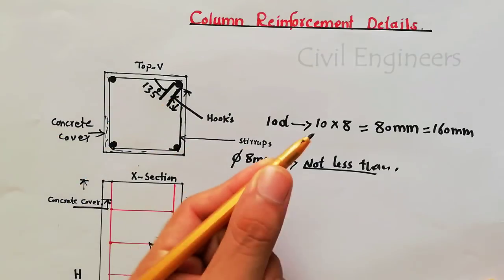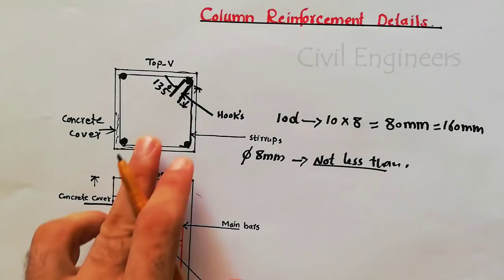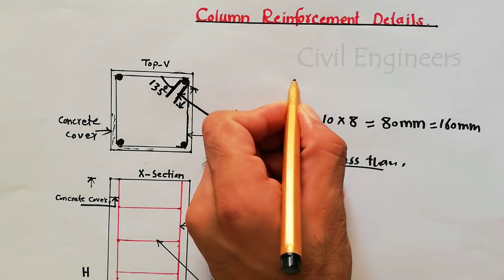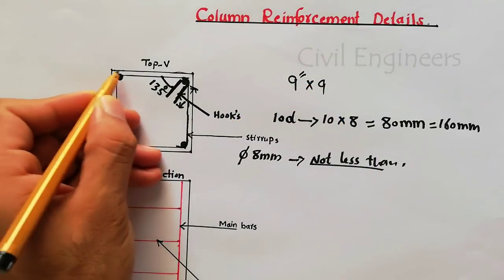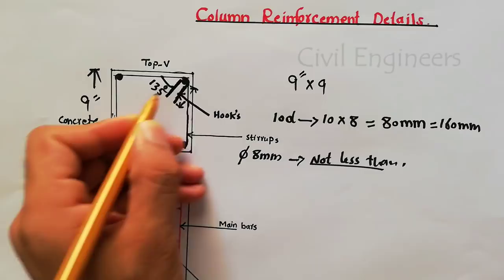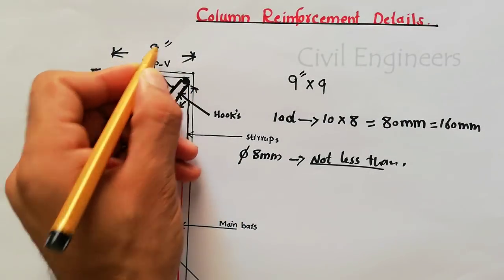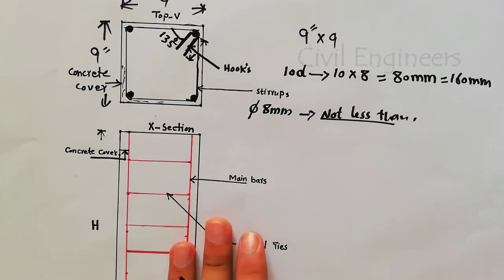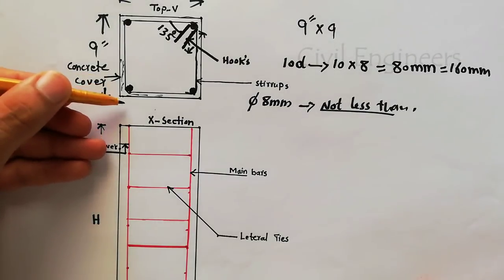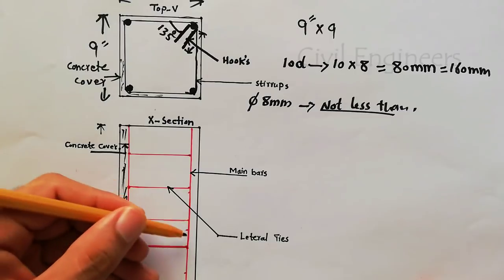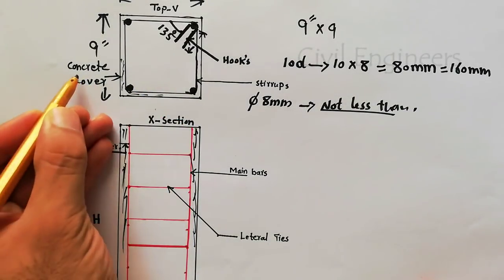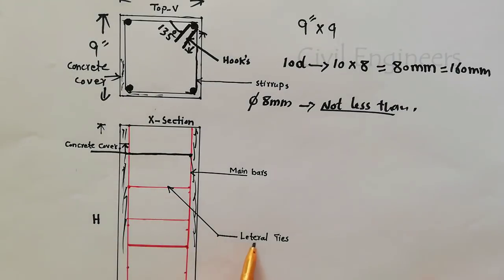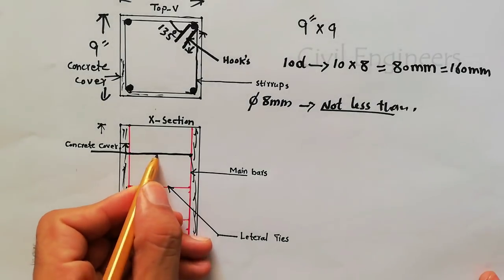Now for the cross section: the column size should not be less than 9 by 9 inches — this side 9 inches and this side also 9 inches. In the cross section, you can see the concrete cover on this side and this side. This inner steel element is called stirrups or lateral ties — both terms are used.